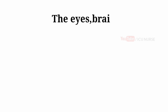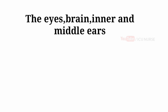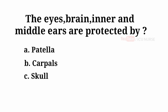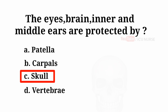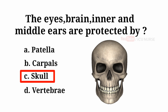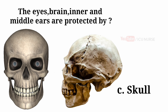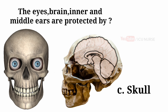The eyes, brain, inner and middle ears are protected by: A. Patella, B. Carpals, C. Skull, D. Vertebrae. And the answer is C. Skull. The eyes, brain, inner and middle ears are protected by the skull.